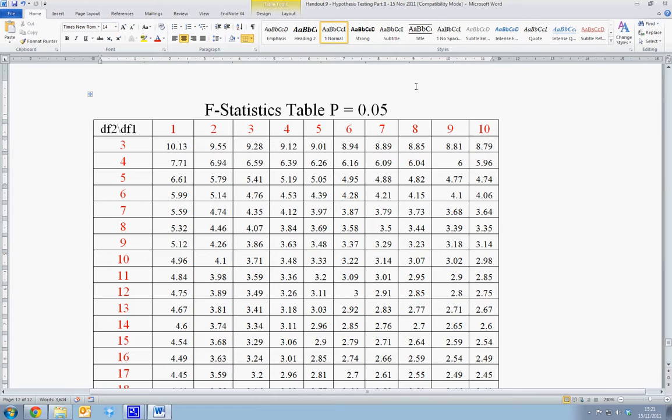In this instance, the degrees of freedom for the numerator are given by j, and the degrees of freedom for the denominator are given by n minus k.